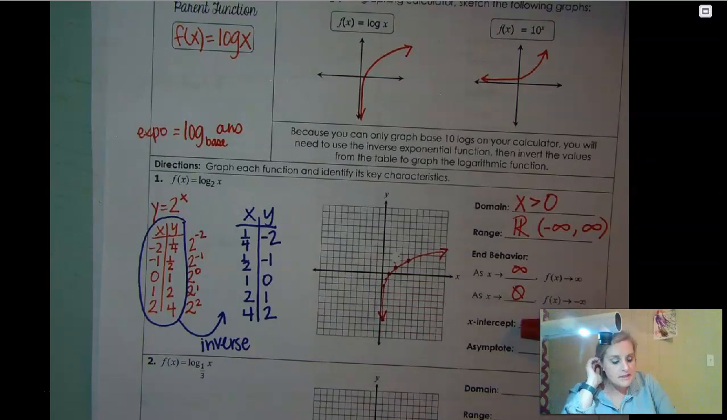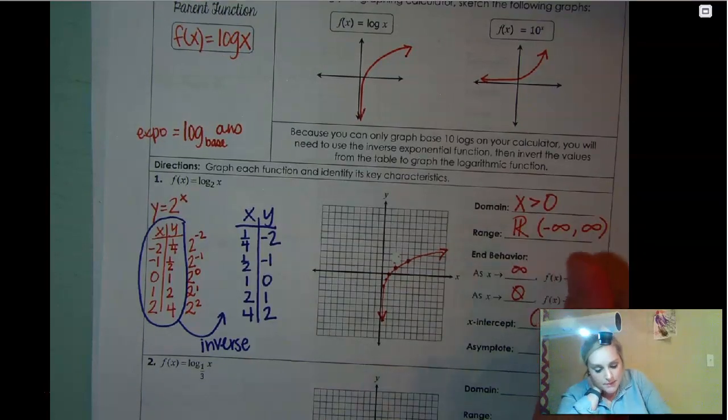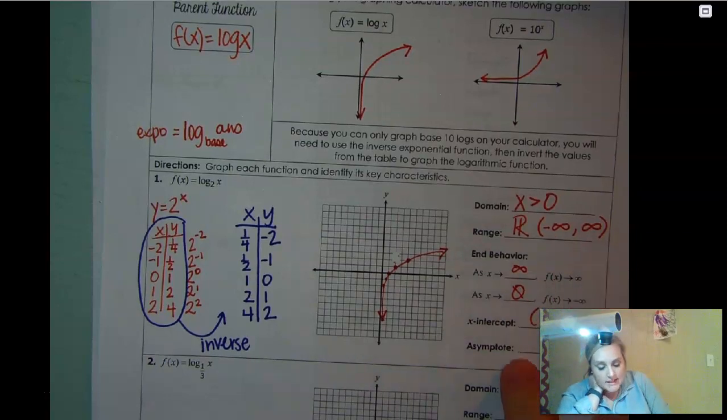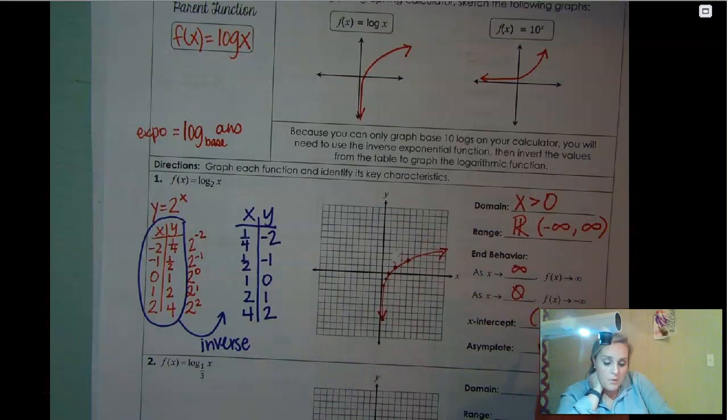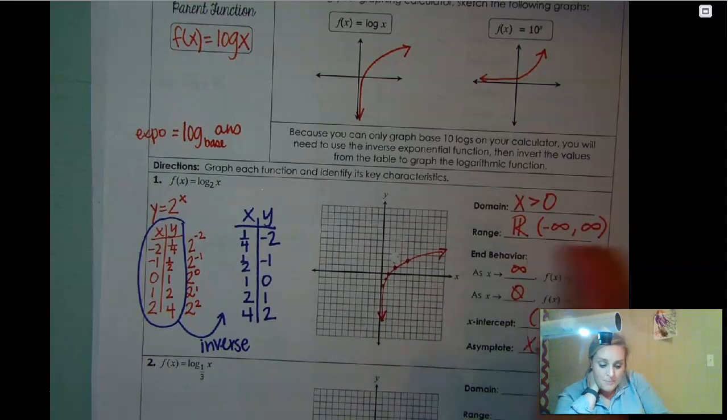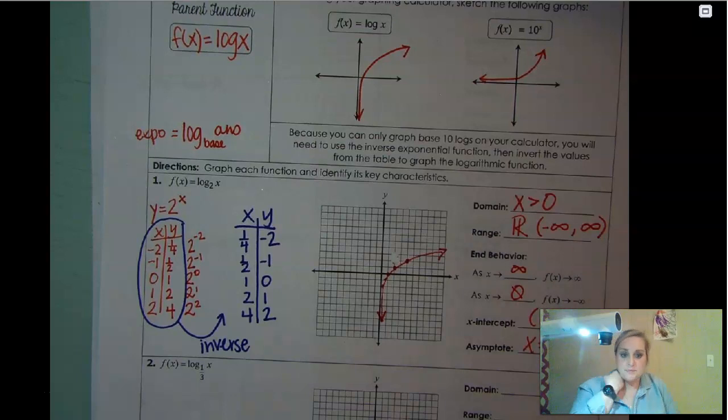The x-intercept is where it crosses the x-axis. This one crosses the x-axis at one zero. And our asymptote is the y-axis. If it's a vertical line, it's going to be x equals zero.